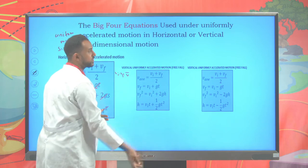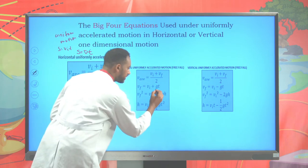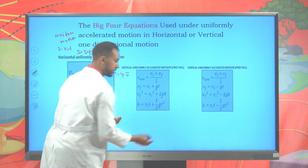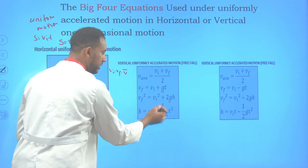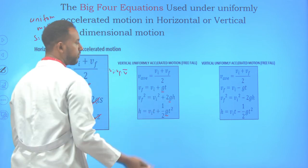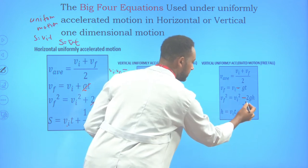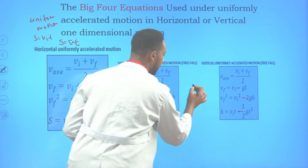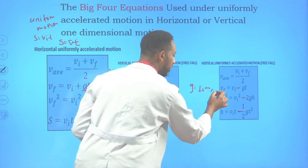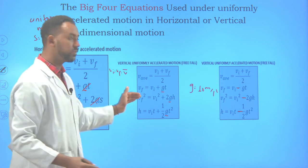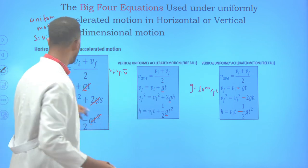For free fall — objects thrown upward or downward — use gravity in place of acceleration. For objects thrown downward, use a positive sign for gravity. For objects thrown upward, use a negative sign convention. Gravity is taken as positive 10 m/s² for calculation purposes.